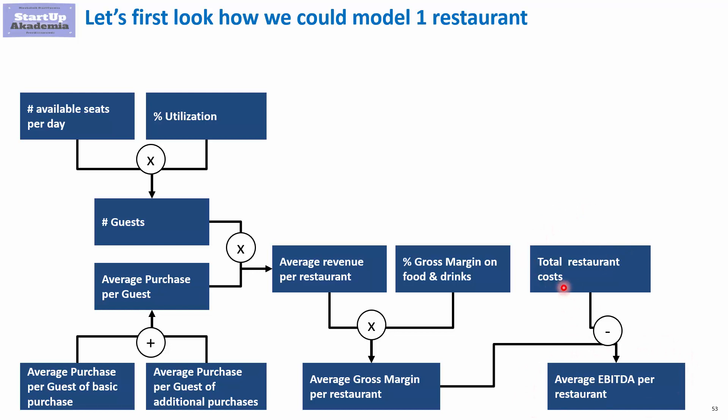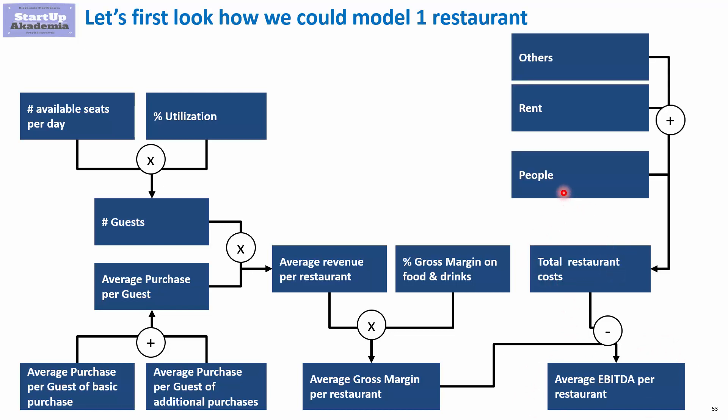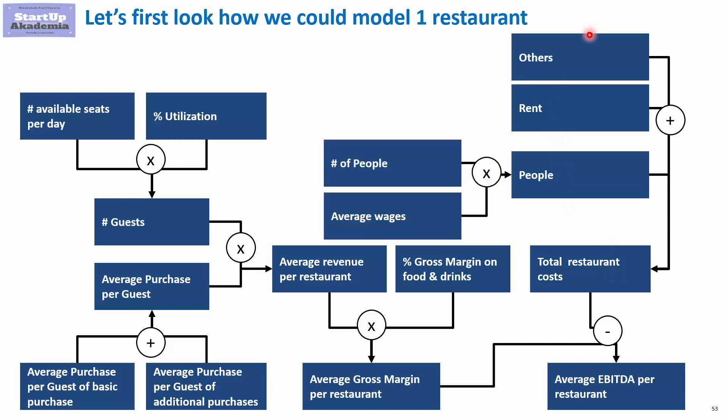When it comes to cost, we look at the restaurant level. We obviously have people, rent, and others. For people, there are just two drivers: the number of people we have and the average wages.